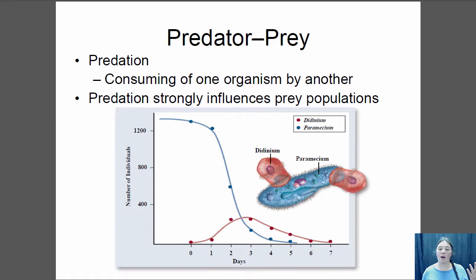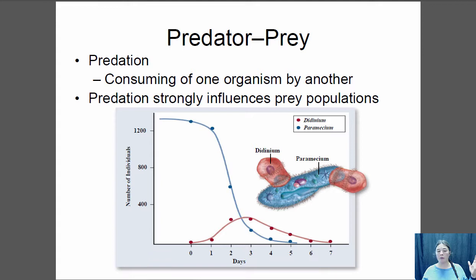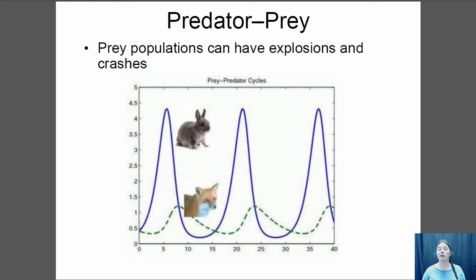Another very important interaction is predator-prey interactions, where one species consumes another. Predation has very strong effects on prey populations. Here's an example with single-celled organisms: Didinium is a predator that eats Paramecium. In a container, Paramecium does fine on its own. Add Didinium and those predators eat the Paramecium — the population declined so far they went extinct, and then the Didinium also went extinct because there was nothing left to eat. These predators have very large effects on prey population sizes.